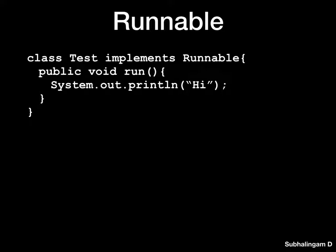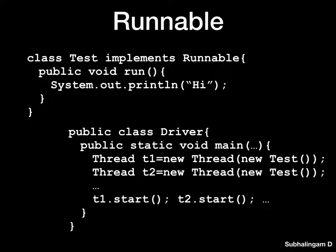The first way is using the Runnable interface. Suppose we need to create a class called Test for which we need parallelism — we say 'class Test implements Runnable'. The Runnable interface has a method called run(), in which we put the block of code that needs to get executed.